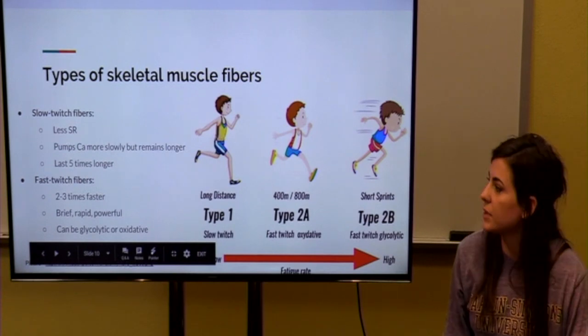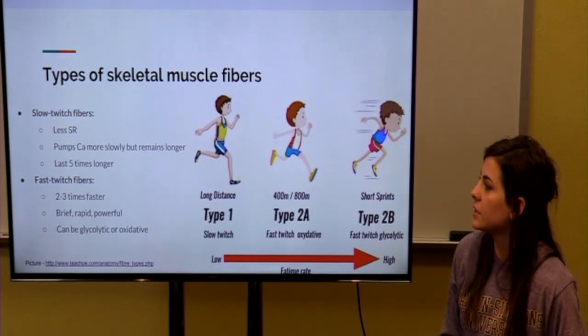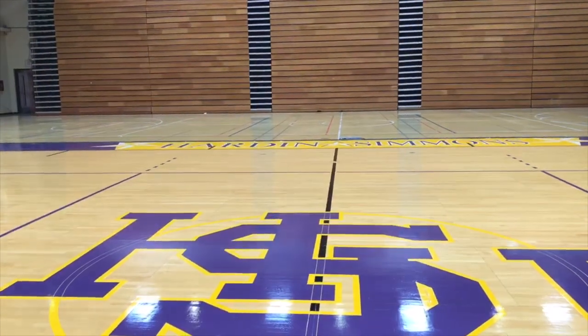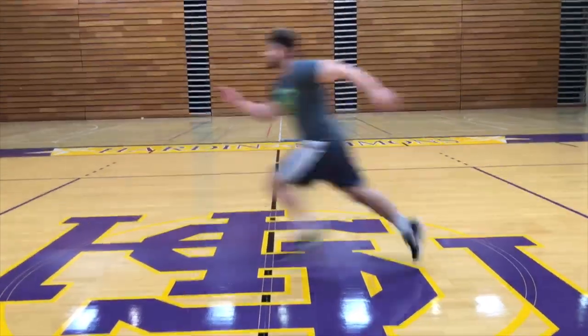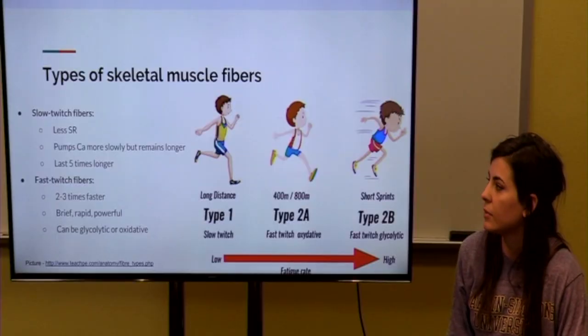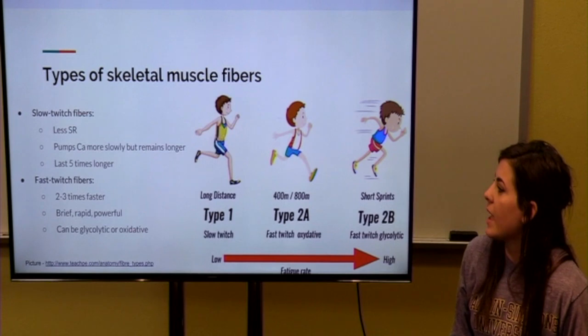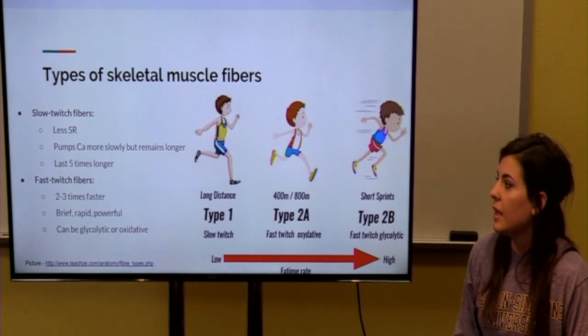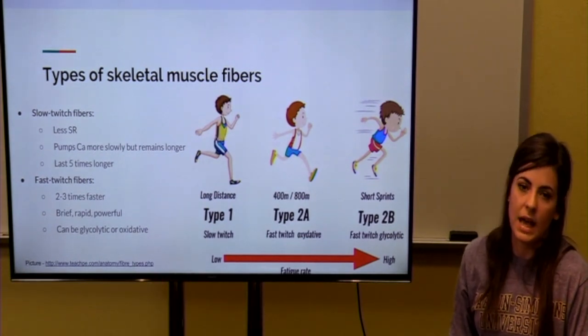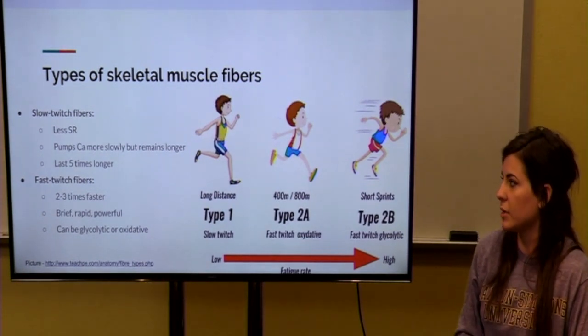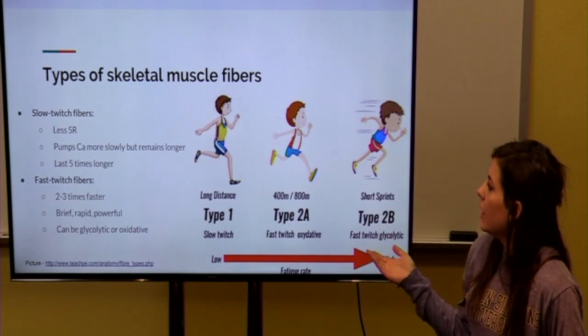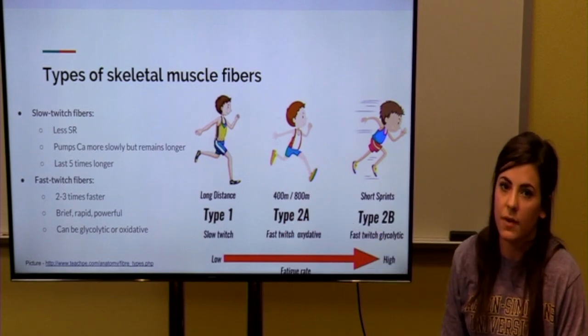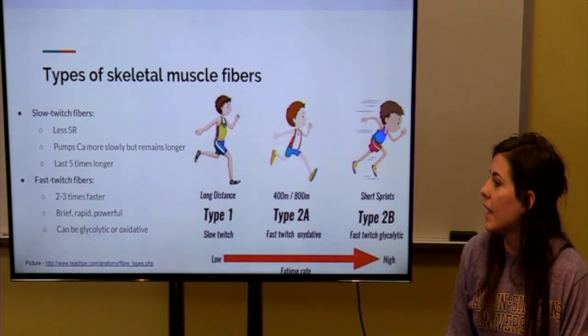So, in these two muscle fibers, they are either slow-twitch or fast-twitch. Slow-twitch fibers have less sarcoplasmic reticulum, and they pump calcium more slowly, but the calcium remains for a longer time. Slow-twitch fibers last five times longer than fast-twitch fibers. And an example here of runners, so you have a long-distance runner, they have more slow-twitch fibers, which allows them to run for a long time.